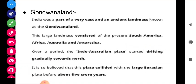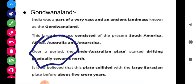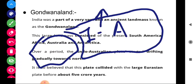Next is Gondwana Land. India was once part of a very vast and ancient land mass called Gondwana Land. This large land mass consisted of the present South America, Africa, Australia and Antarctica along with India. The Indo-Australian plate gradually started drifting northward, separating from the rest of Gondwana Land.